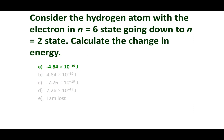Before I close this out, I want to highlight what our transition is. I started at N equals 6 and went to N equals 2, so I'm dropping energy levels — this is going to be an emission. Remember, if I have an emission, I'm going to have a negative delta E. And that's exactly what we calculated out for this problem.